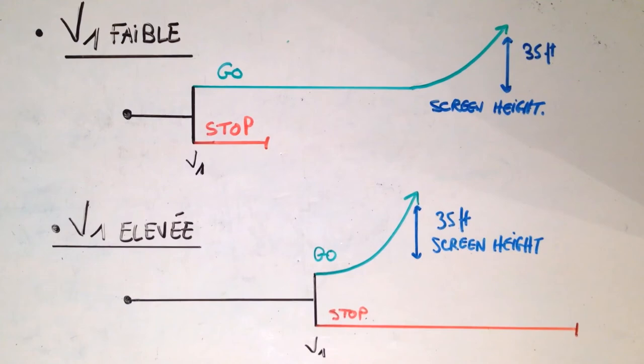When we are in the case where we have a range of V1 available, what will determine if we choose a V1 low or a V1 high, it will be the configuration of the terrain. So if we are limited in terms of the stopping distance, in these cases, we will prefer a V1 low, because at the moment of the engine failure at V1, we will have kinetic energy accumulated which will be lower, so it will be easier to stop.